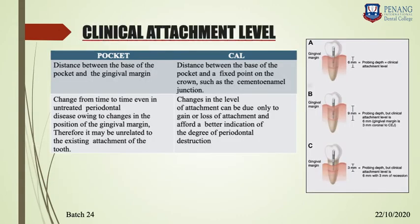Next is clinical attachment level (CAL). The pocket depth is the distance from the gingival margin to the base of the pocket, whereas the clinical attachment level is measured from the cementoenamel junction (CEJ) to the base of the pocket. That is the difference between pocket depth and CAL.